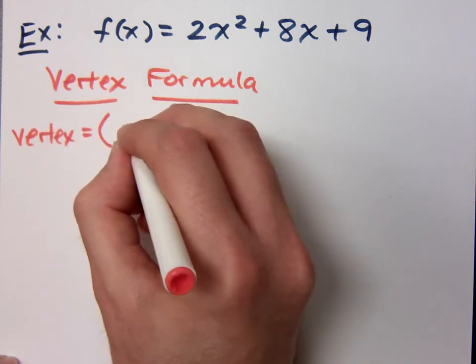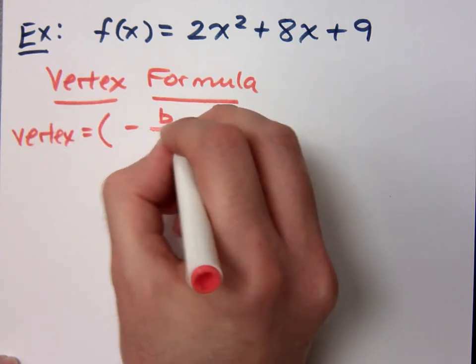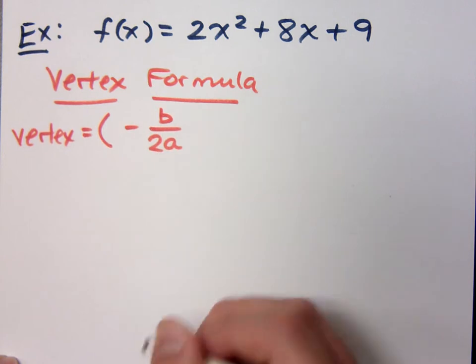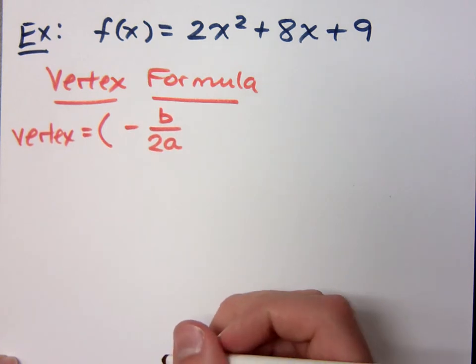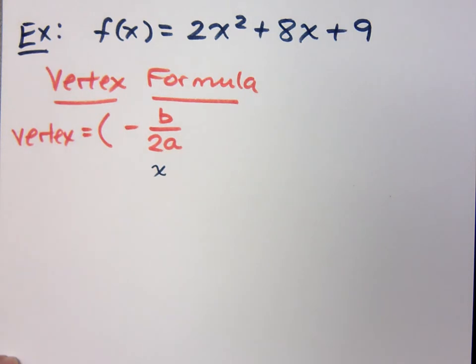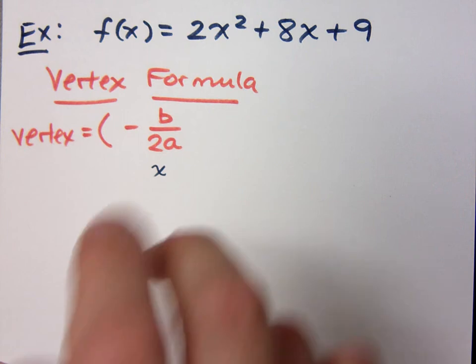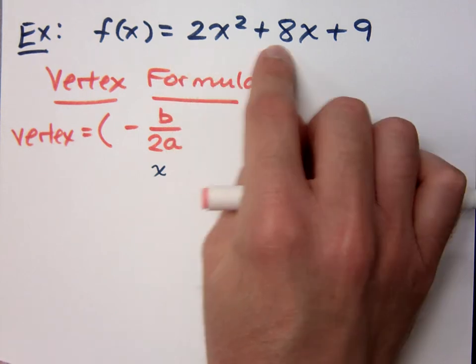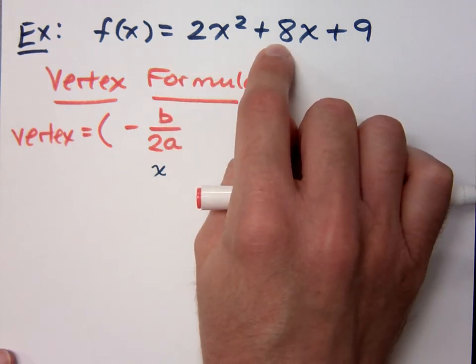Your vertex is equal to negative b over 2a. Basically, what that means is this is your x-coordinate. You guys with me on that? Now, where does the b and the a come from? What are those numbers? Coefficients. Coefficients for your standard quadratic equation. a is your lead coefficient. b is your middle term.